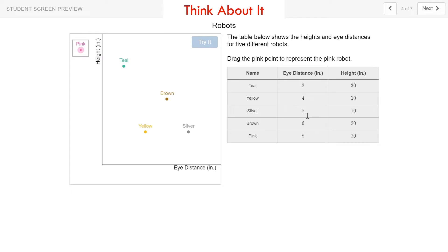Well, the silver robot also has an eye distance of 8. So I know that when it comes to eye distance, my pink robot needs to be the same eye distance as my silver robot. So it needs to be somewhere along this vertical line. I also know that the pink robot has a height of 20 and the brown robot also has a height of 20. So it needs to be the same height as the brown robot on this horizontal line and the same eye distance as the silver robot on this vertical line. So I'm going to try it out. Another happy robot. That sounds pretty good to me.